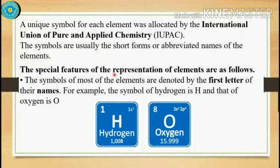The special features of the representation of elements are as follows. The symbols of most of the elements are denoted by the first letter of their names. For example, the symbol of hydrogen is H and the symbol of oxygen is O.